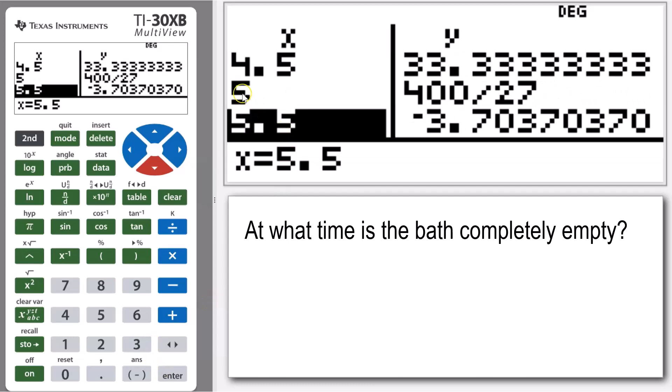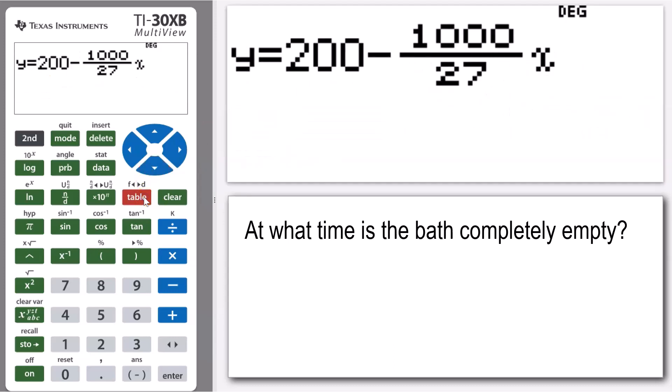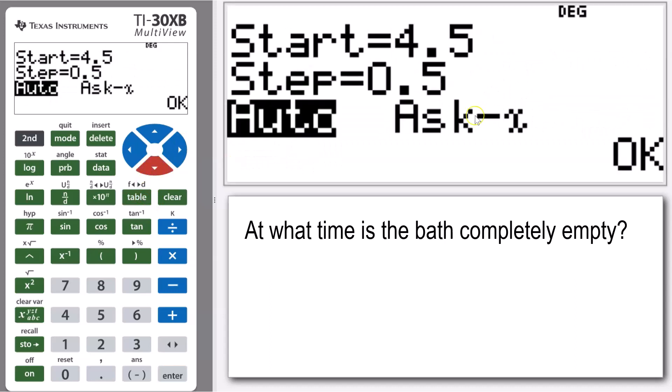And we can see that happens between five and five and a half minutes. So at five minutes, our volume was 400 over 27, and at five and a half minutes, that goes down to negative 3.7 liters. Now I'm going to go back to my table settings again, and I'm going to change the step.